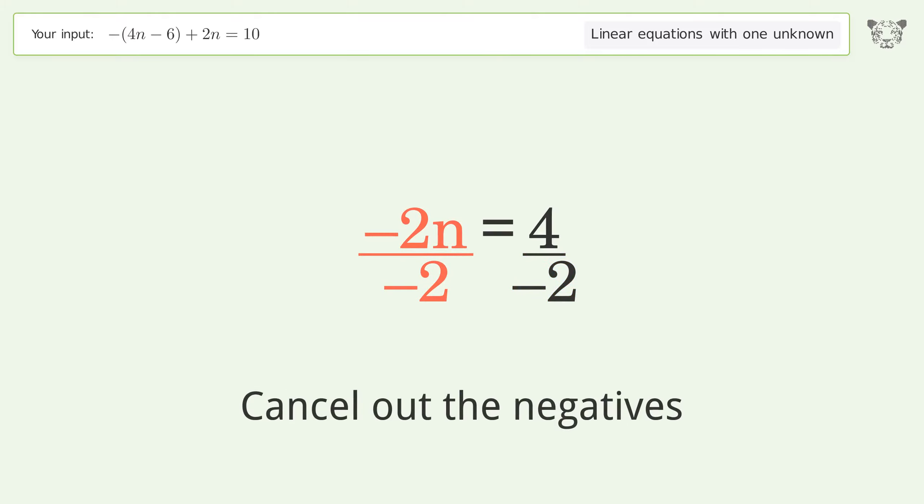Isolate the n. Divide both sides by negative 2. Cancel out the negatives.